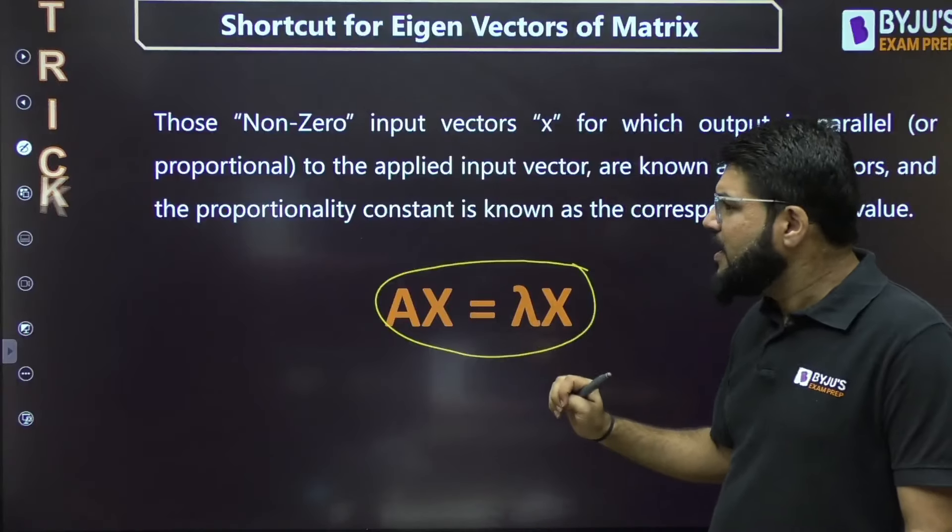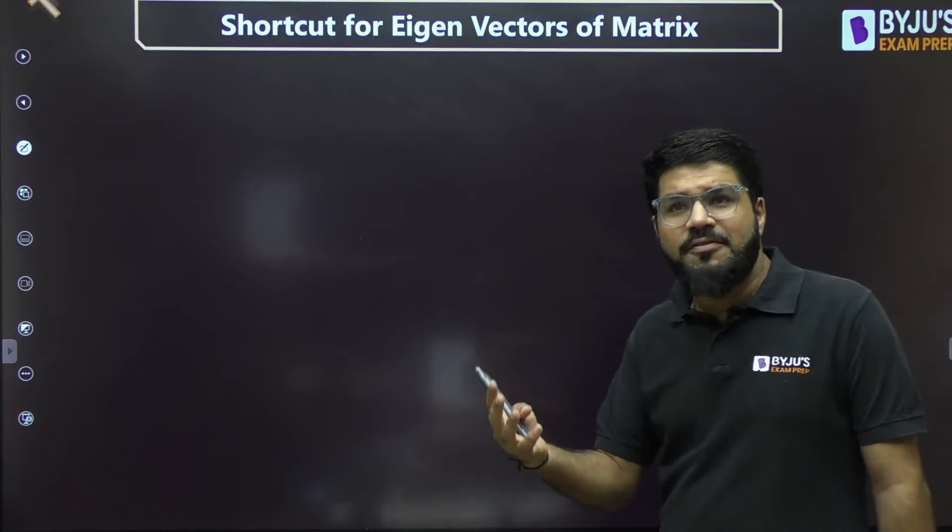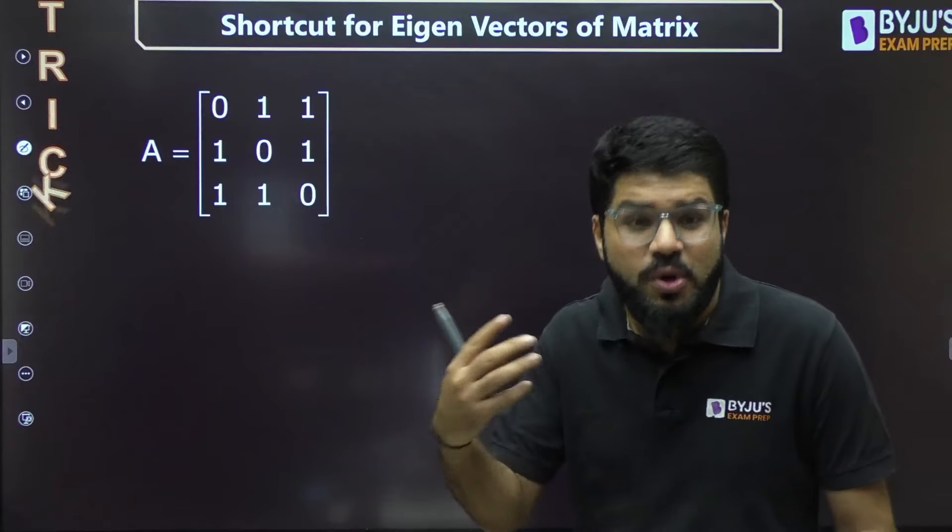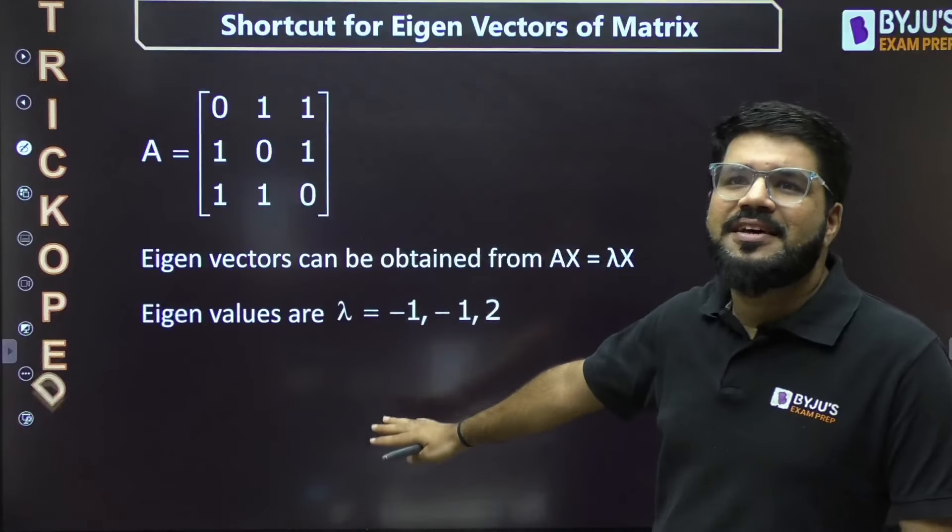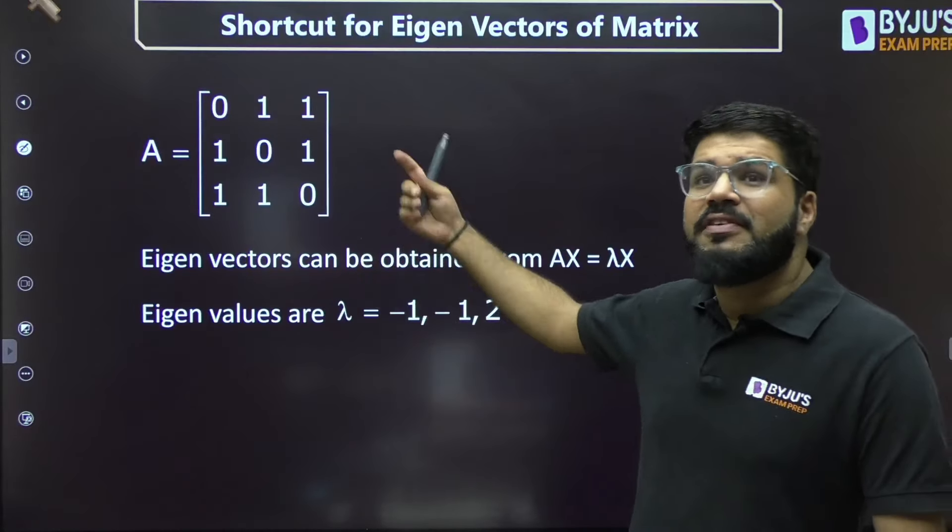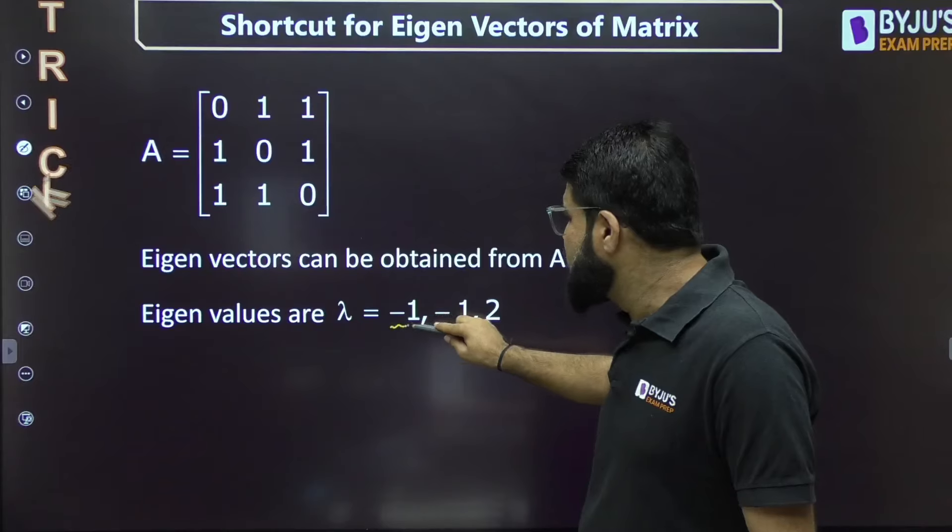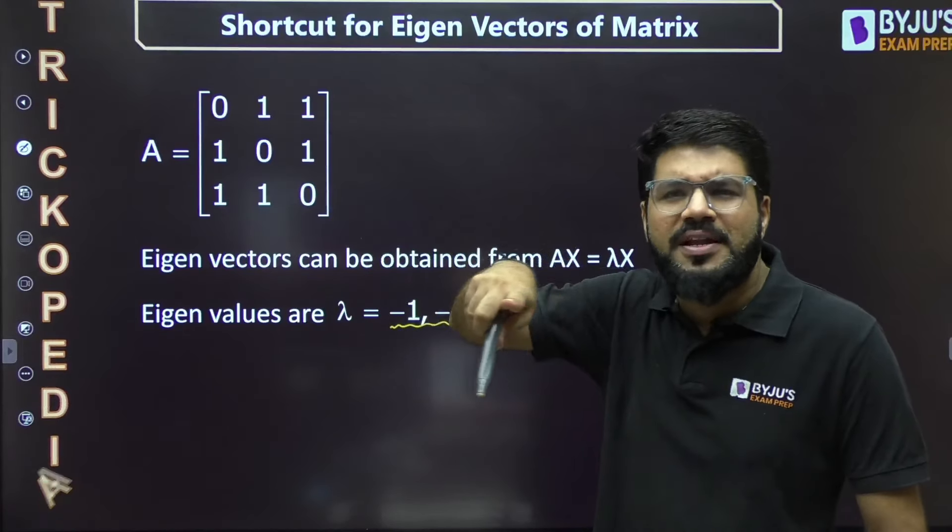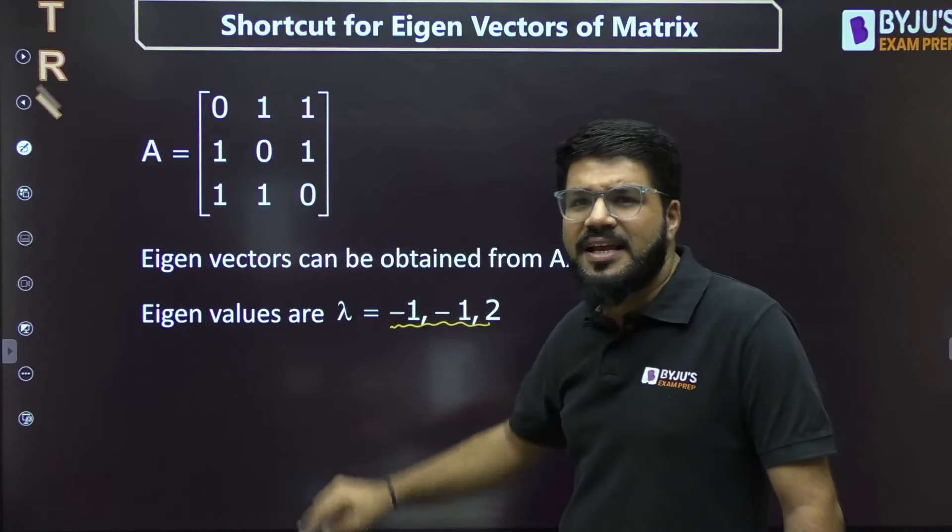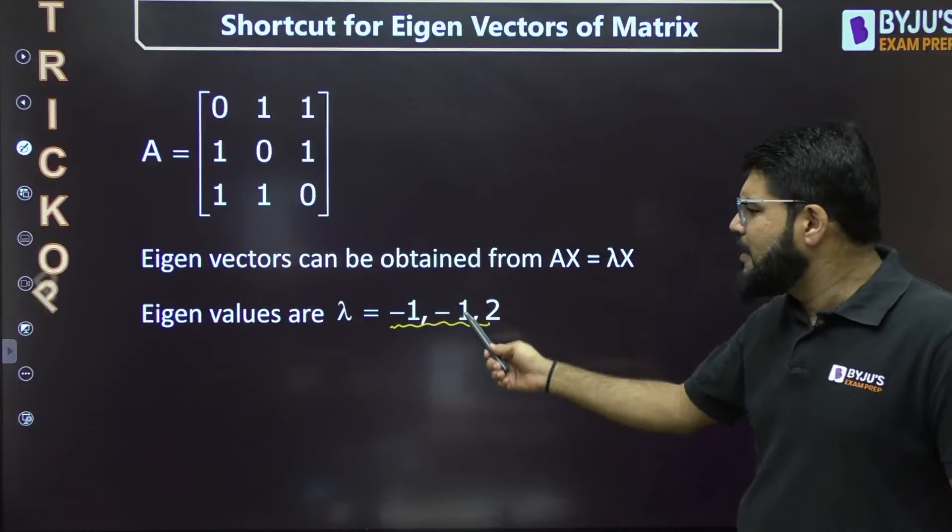For your clarity, if you want to know the conventional method, these slides are here for reference. First I need to find eigenvalues - you can refer to the previous Trickopedia video. I've solved for the same matrix; eigenvalues come up to be -1, -1, and 2.